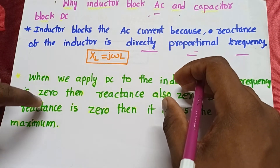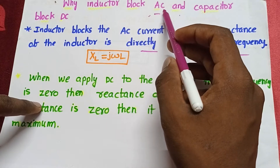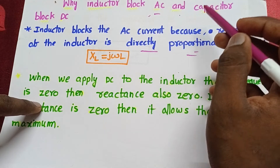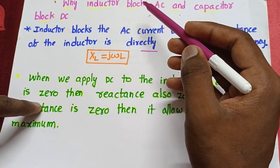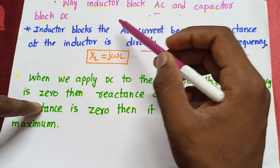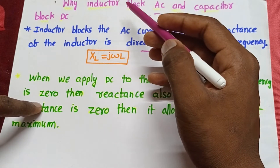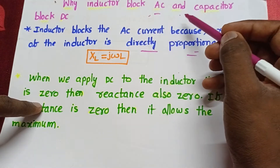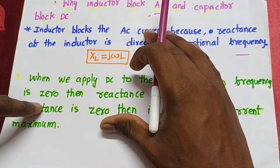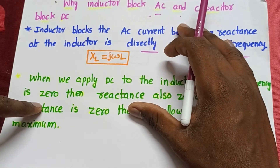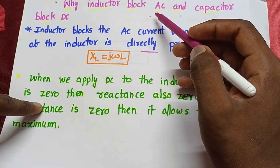Hi friends, in this video we will discuss why an inductor blocks AC current and why a capacitor blocks DC current. We know an inductor only allows DC current and a capacitor only allows AC current. First, let's see why the inductor blocks the AC current.